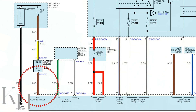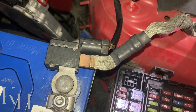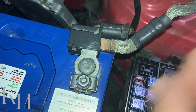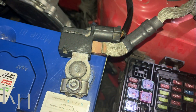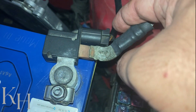Looking at the wiring diagram for the battery sensor on this car, the yellow wire is connected to the battery and the brown wire is actually the LIN bus, which is connected to the engine control module. So in this case, the ECM is the master node and the battery sensor is the slave node.